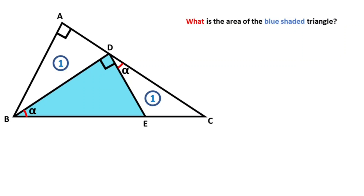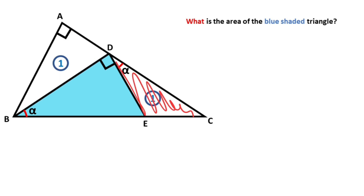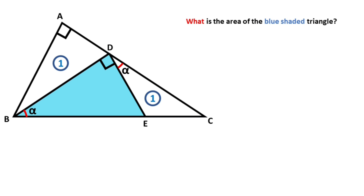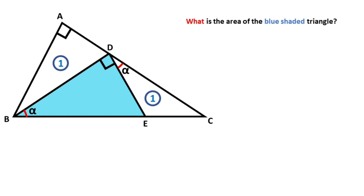Hello everyone. In this video we have one triangle, and the area of triangle ABD and the area of triangle DEC are given in a one unit square. These two angles are given as equal, and these are given as 90 degrees. The question is: what is the area of the blue shaded triangle?